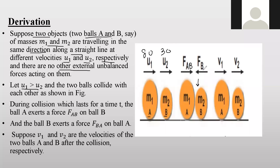The force applied by A on B is written as F_AB, and the force applied by B on A is written as F_BA. If you write AB, the force is from A on B; if you write BA, the force is from B on A. After the collision, they move with different velocities v1 and v2.